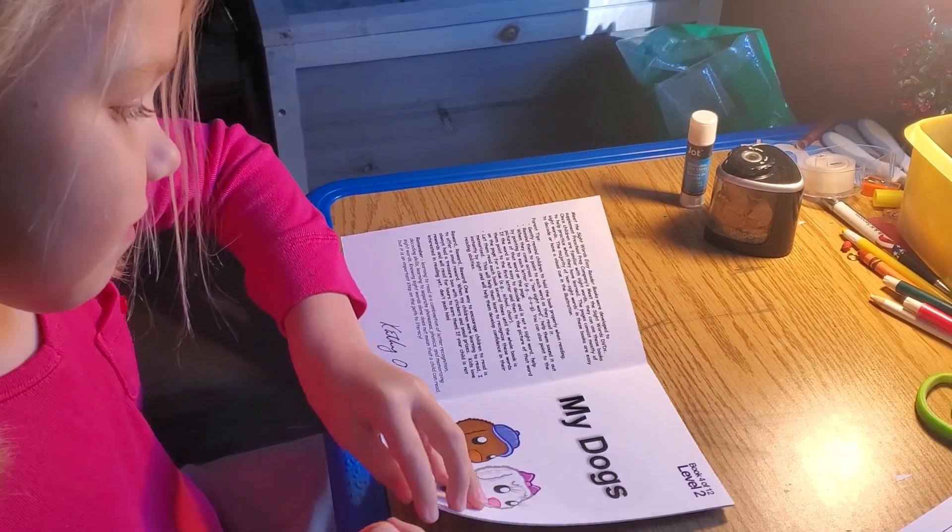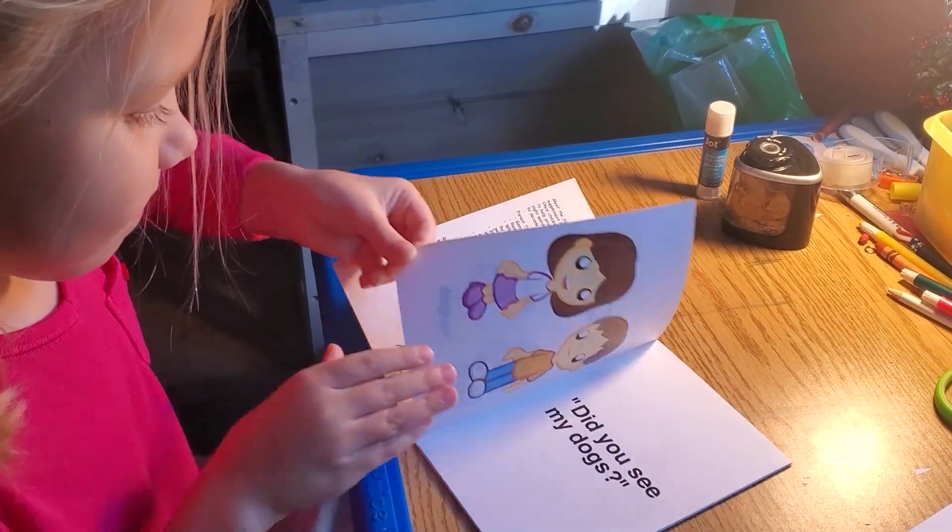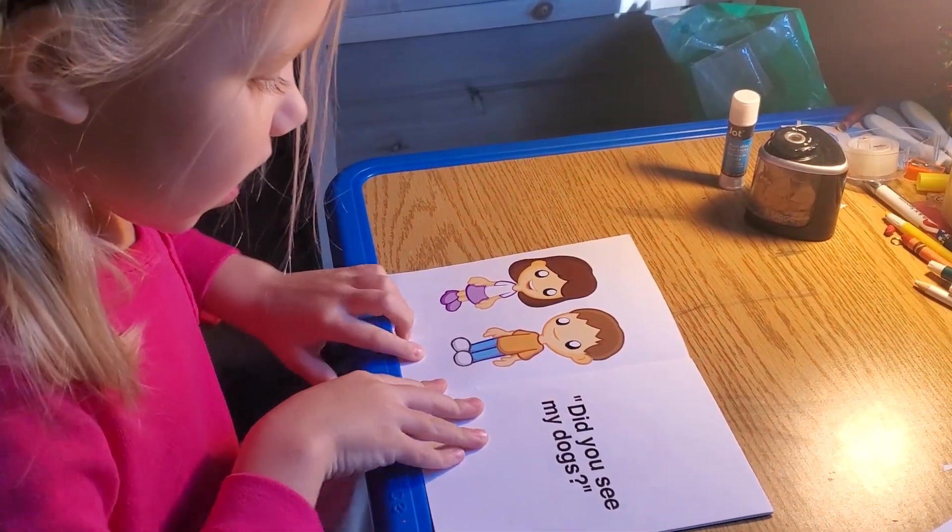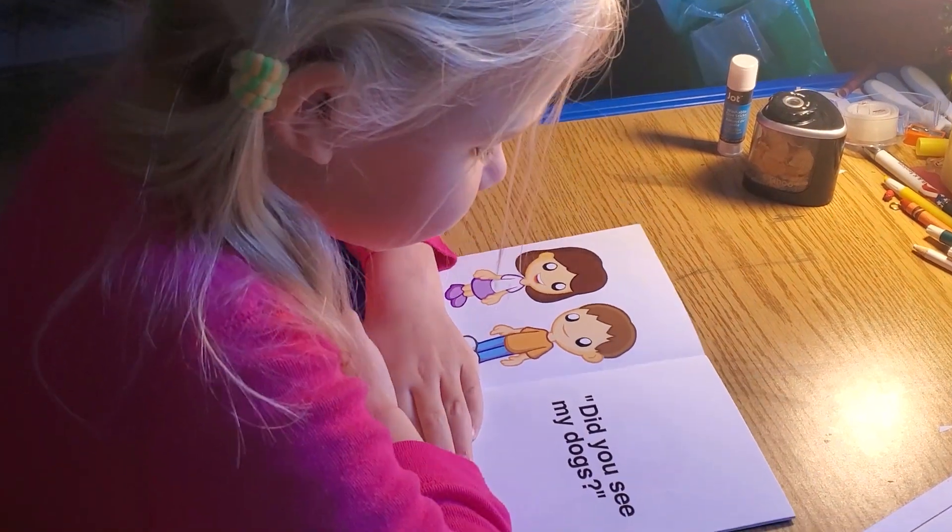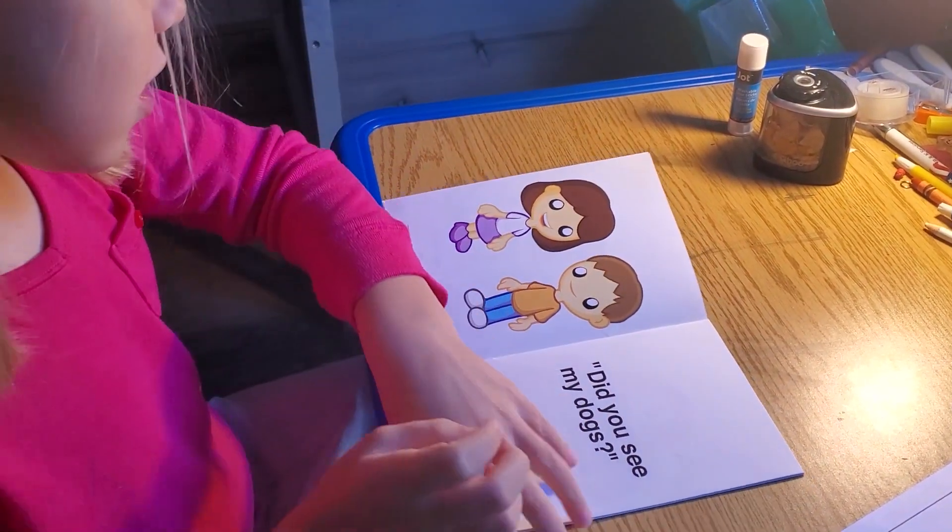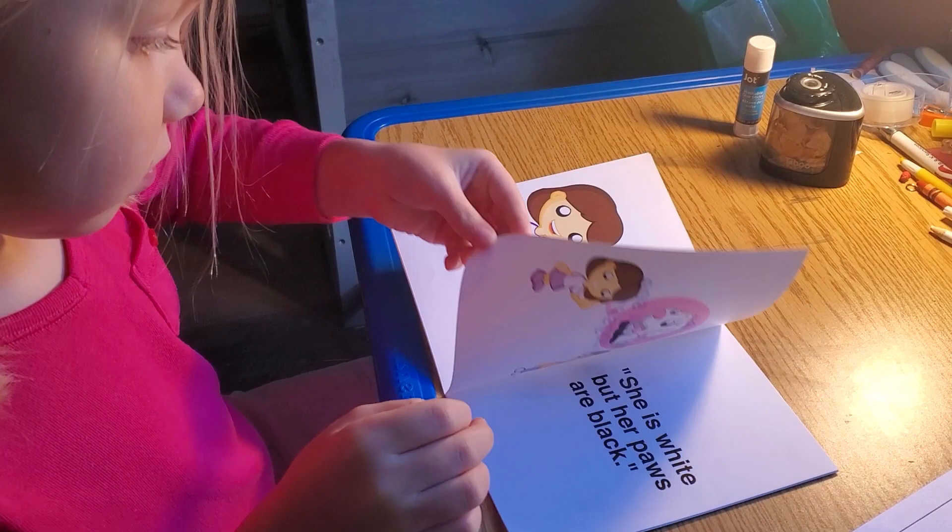However, now that my daughter is halfway through kindergarten, we just started second semester of kindergarten, I started seeing results. My daughter is reading. She can add. She can subtract. She's counting. She knows all the basics. She can write simple sentences. She's doing really well for where she should be at this moment.